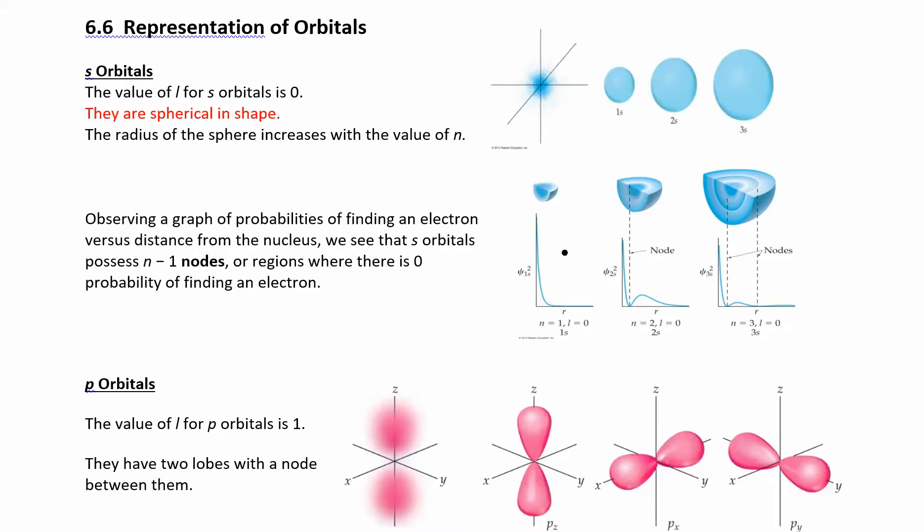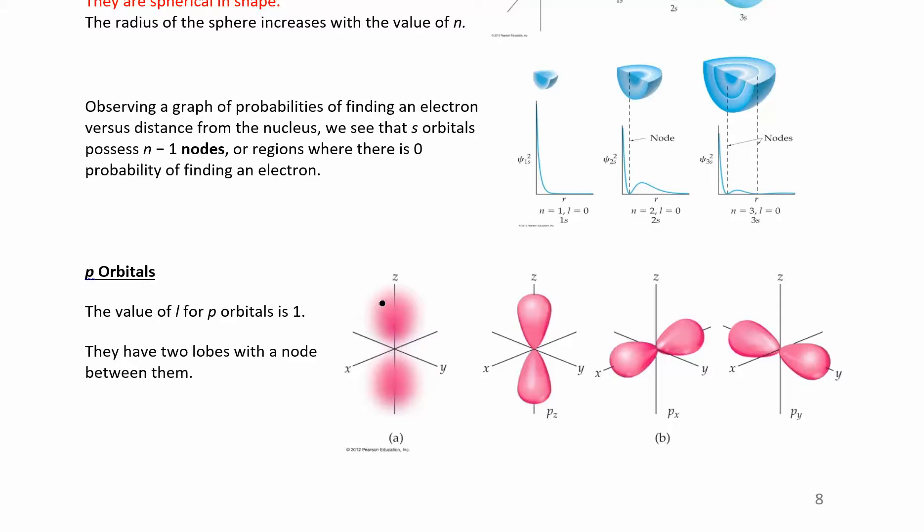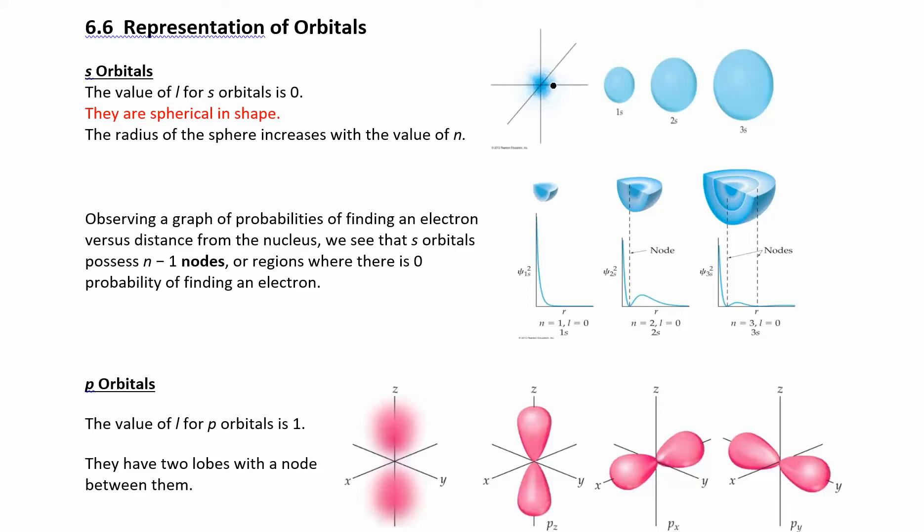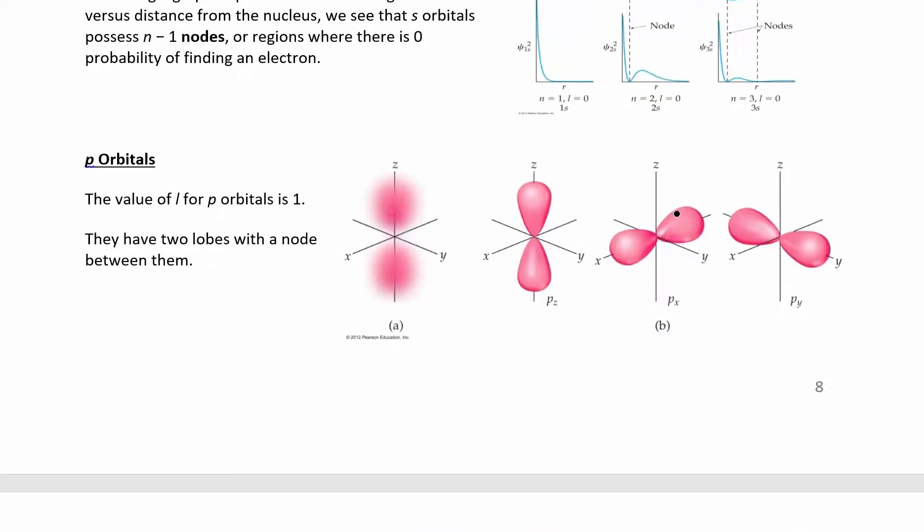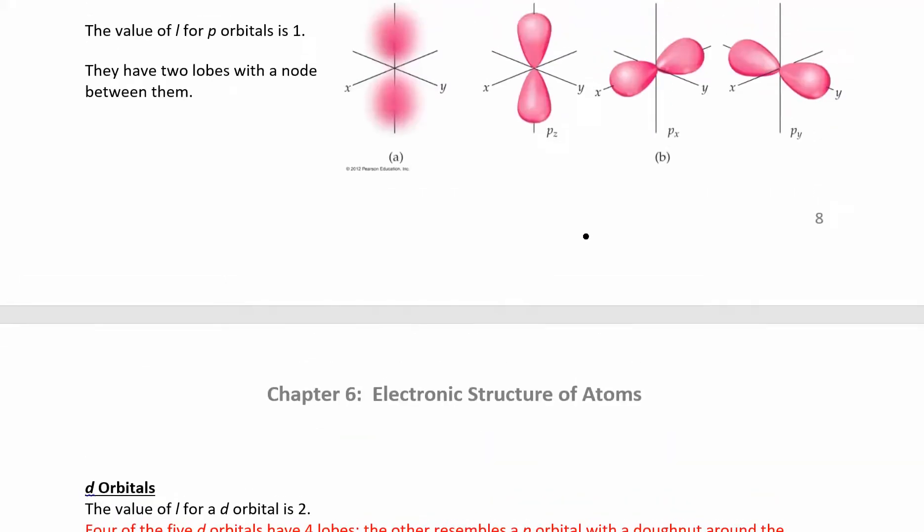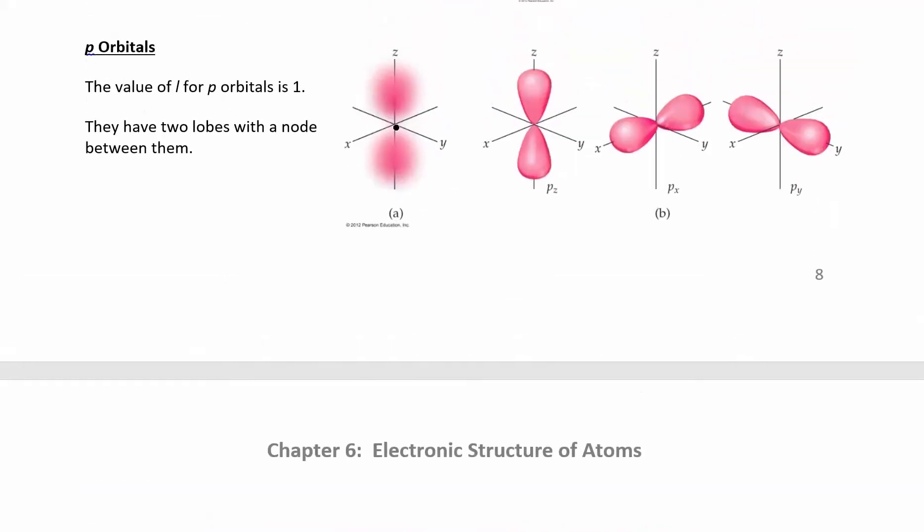P orbitals look like this peanut. It's a peanut shape with a dumbbell. You have three different orientations. S orbital, you only have one. It's fixed in the center. It's only one orientation. For P orbitals, they can be on each one of the axes. And then you have zero probability of finding an electron right here in the middle. So it's going to be here or here, but not in the middle.